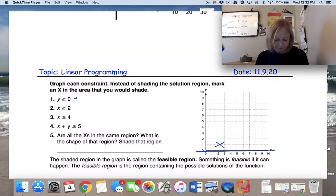Next one, x is greater than or equal to 2. So an x line is a vertical line. Greater than 2 would be to the right.